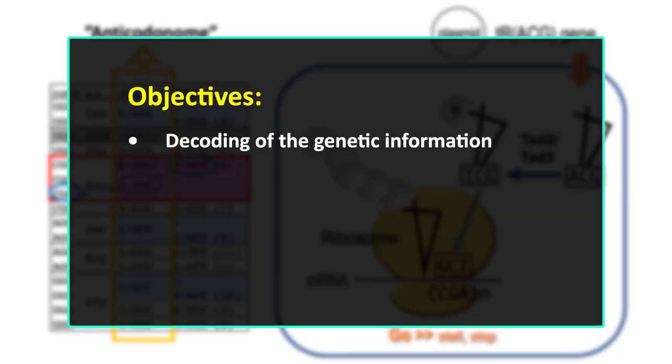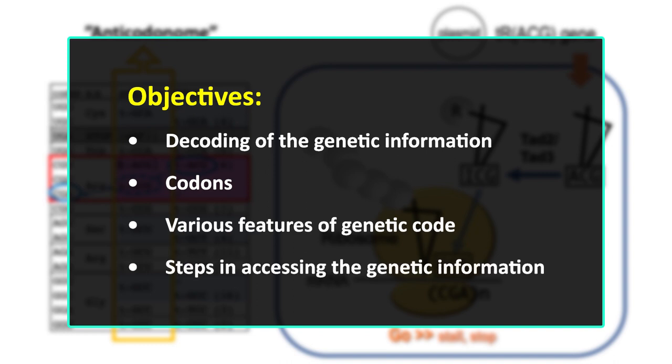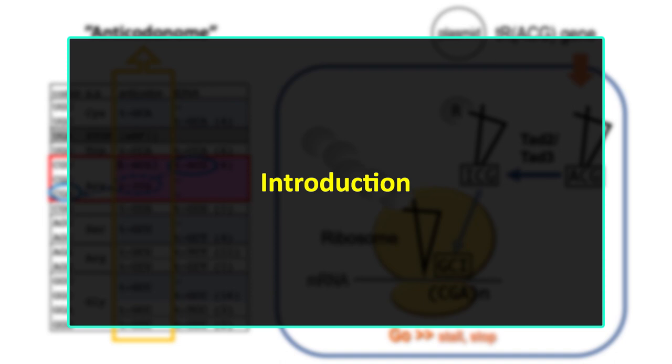Dear students, today we will learn about the topic: decoding the codons. The objectives of today's lecture are to know about the decoding of the genetic information, to know about the codons, to study various features of the genetic code, and finally to learn about the steps in accessing the genetic information.